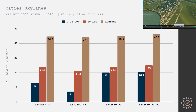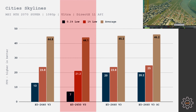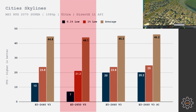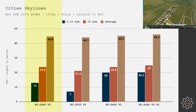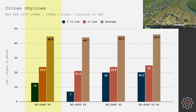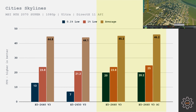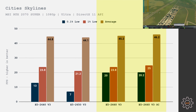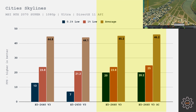Cities Skylines is yet another game where the 2650 struggles a lot, posting 7 fps 0.1% low, 21 fps 1% low, and 44 fps average. The 2640 improves to 13 fps 0.1% low, 23 fps 1% low, and 44 fps average. The 2660 with and without overclock show almost identical results: around 20 fps 0.1% low, 23–25 fps 1% low, and 45–46 fps average.